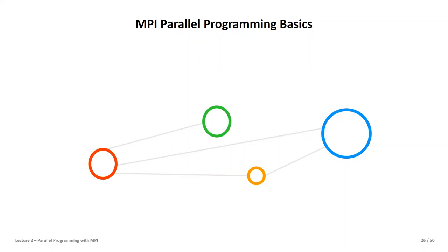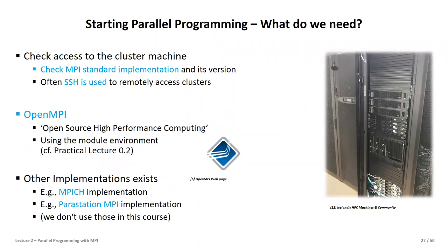Let's look a bit deeper into MPI. First, we have to have access to a cluster — in our case, a U-turn machine. We often use SSH to access a remote machine, which we did in the previous practical lecture. We also checked the idea of using the module environment to see what MPI implementations exist on this machine: there's Parastation MPI, sometimes MPICH, but we use OpenMPI in this course. So the first thing to check is which MPI implementation you want to use.